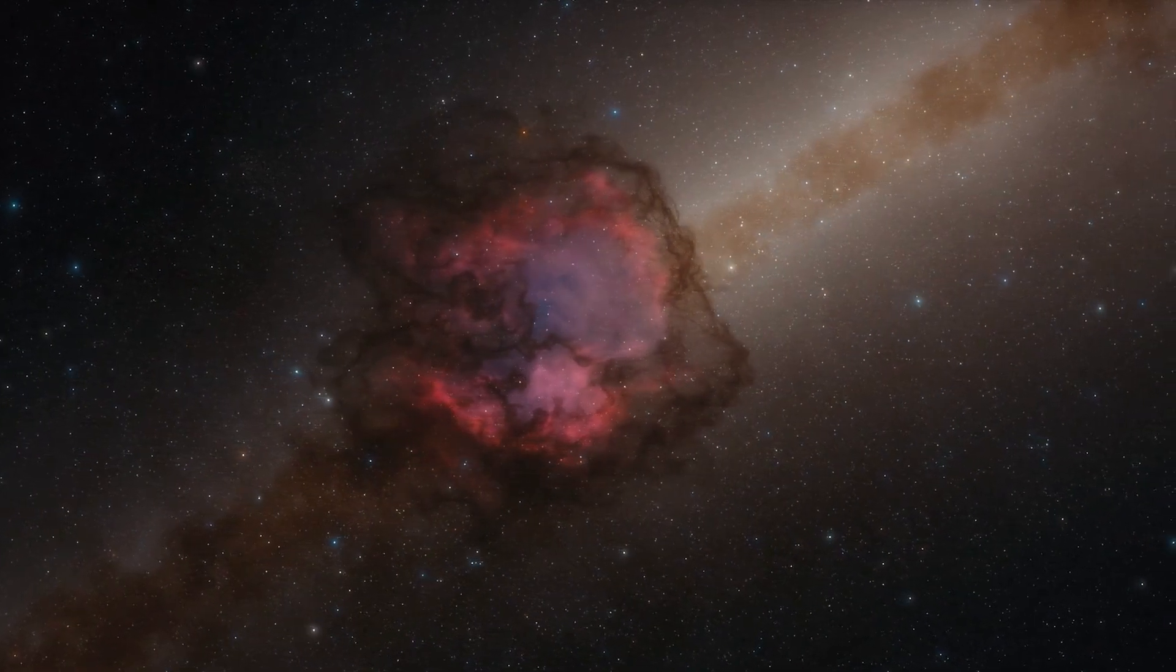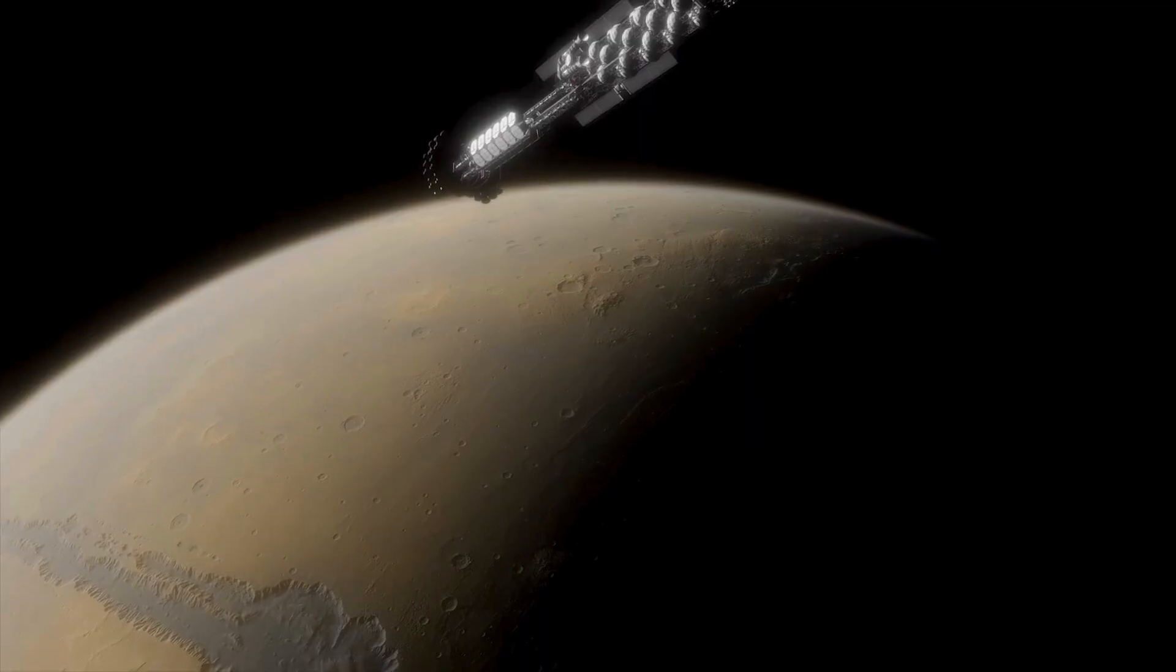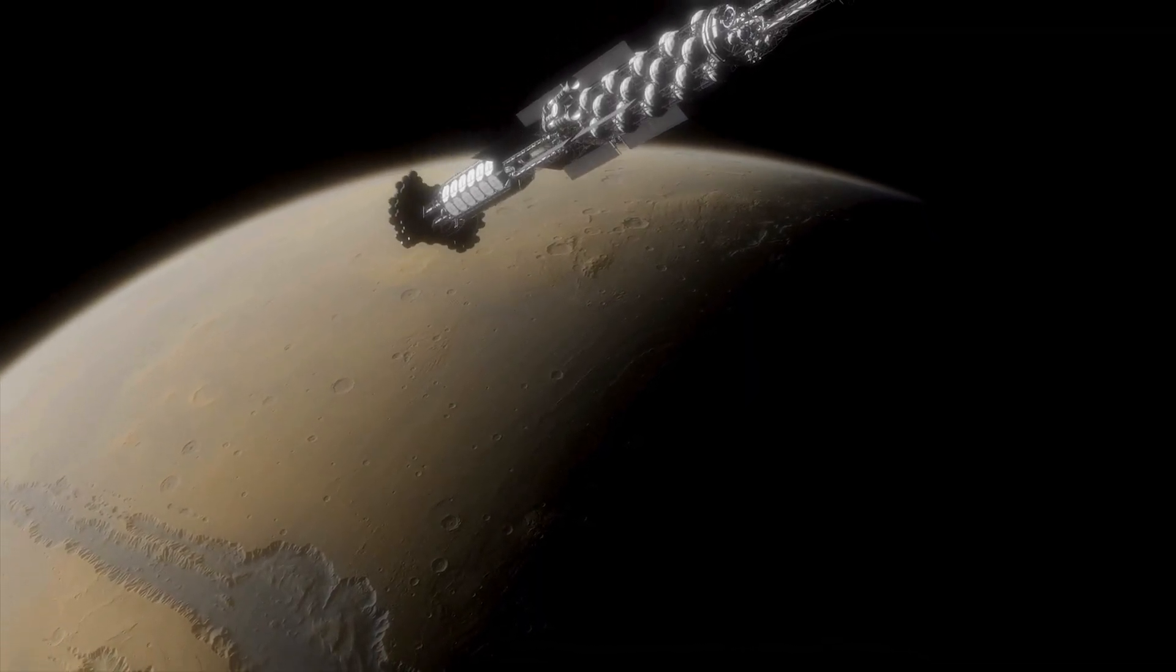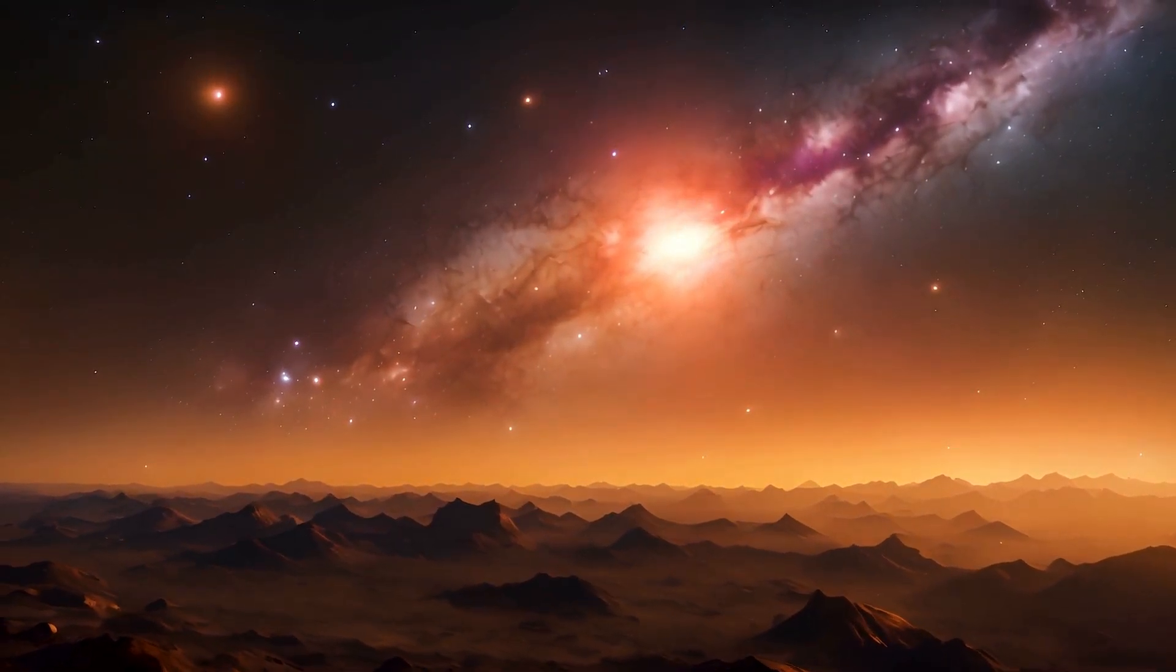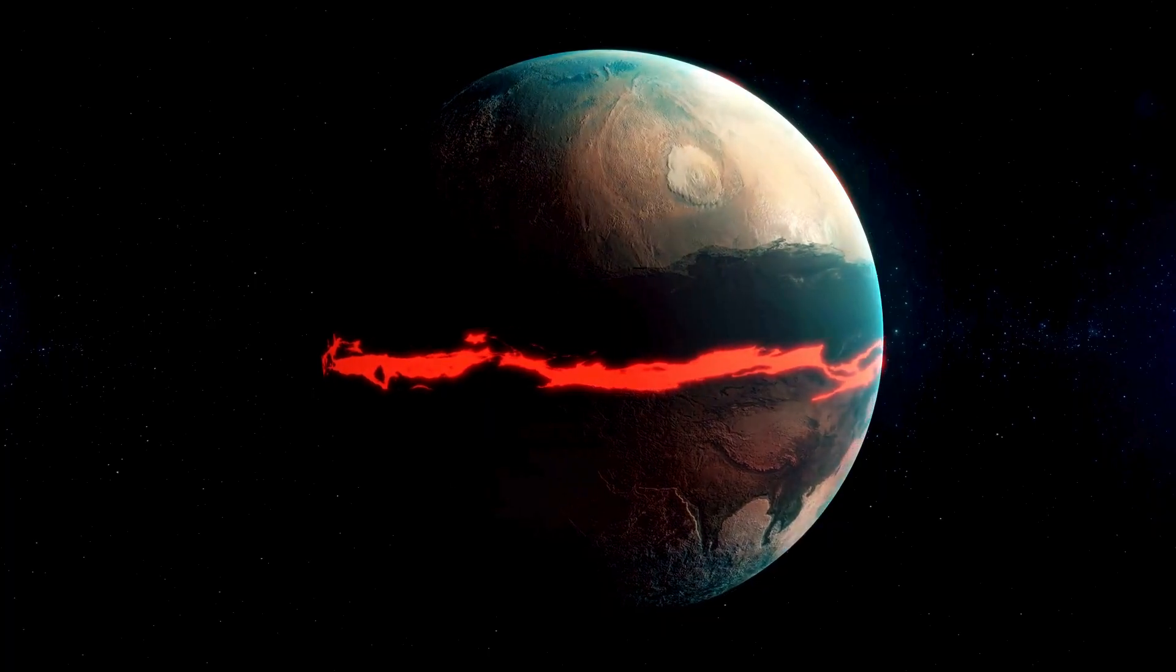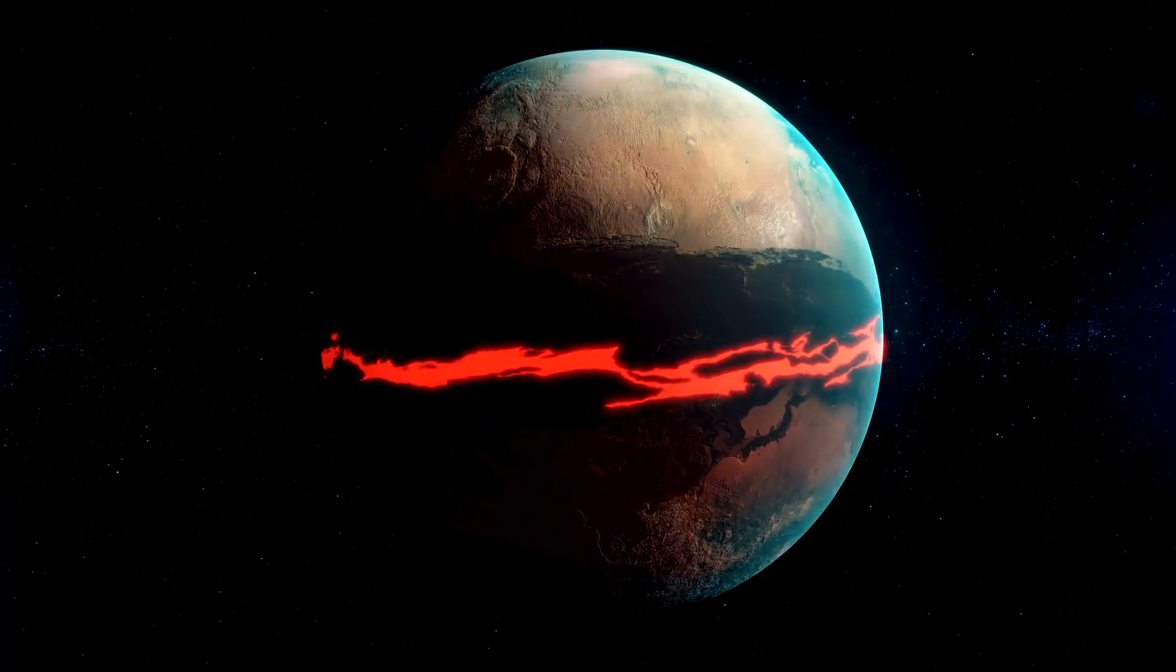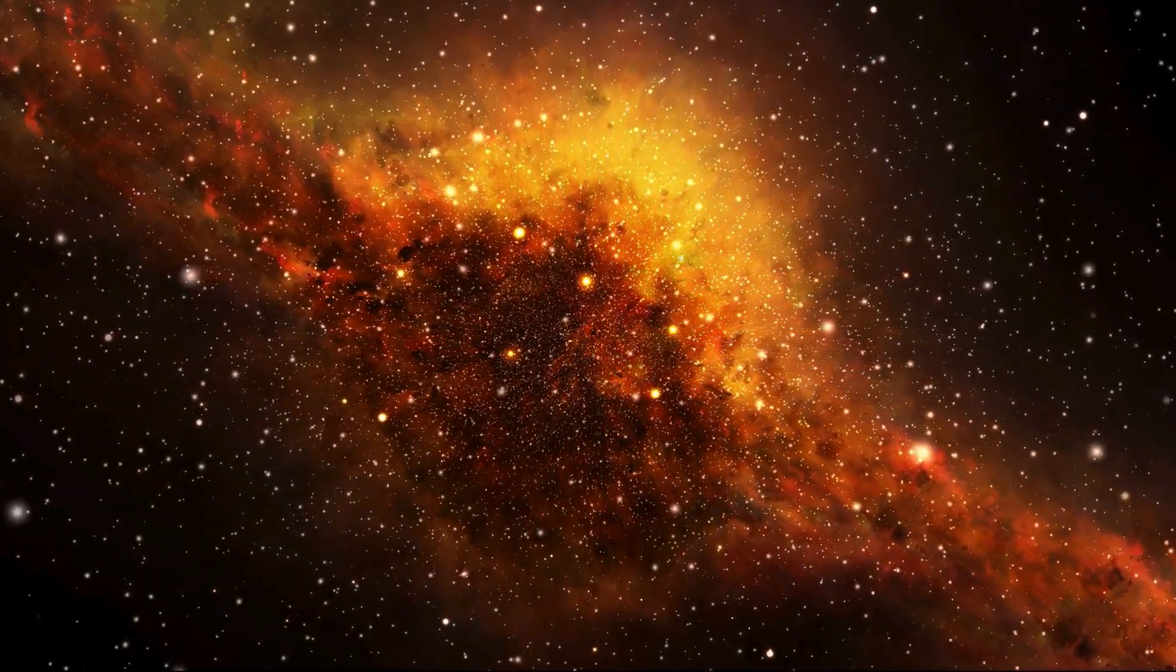In 1977, NASA launched two spacecraft, Voyager 1 and Voyager 2. Originally designed to take advantage of a rare planetary alignment that occurs only once every 176 years, the mission was meant to perform a grand tour of the outer planets.